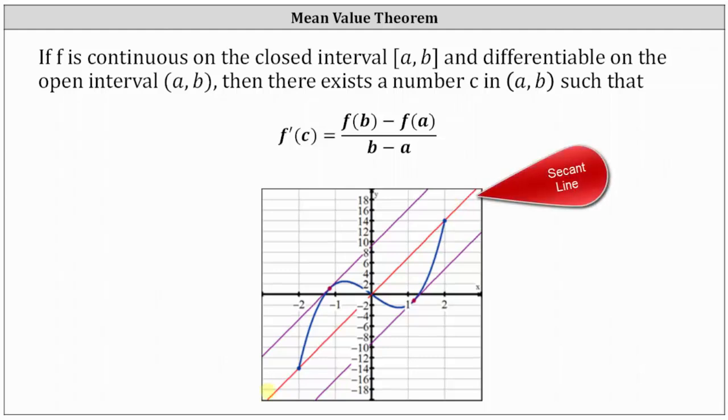Over this closed interval, this red line is a secant line. The slope of the secant line represents the average rate of change of the function over this closed interval. And because the function is continuous over the closed interval and differentiable over the open interval, there must be at least one x value in the interval where the instantaneous rate of change or the slope of the tangent line would be the same as the slope of the secant line.